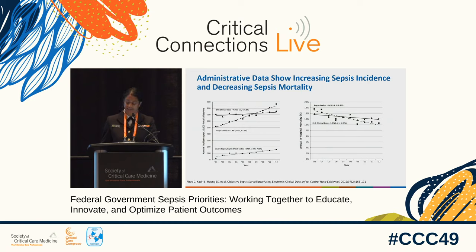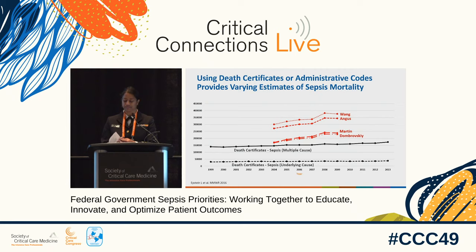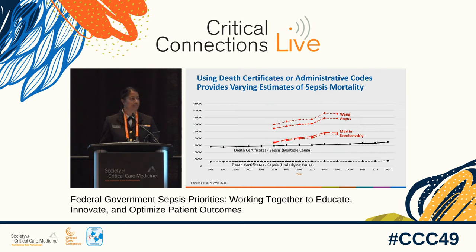Trends towards increasing incidence and decreasing mortality are clearly steeper when assessed by administrative codes. This raises the question of whether hospitals using administrative codes to track sepsis are seeing higher case counts and lower mortality rates, and if this may at least in part be due to ascertainment rather than true representation of disease incidence and outcome. Differences in mortality estimates obtained via death certificates versus administrative codes highlight the need for reliable, objective methods for measuring sepsis incidence and mortality.